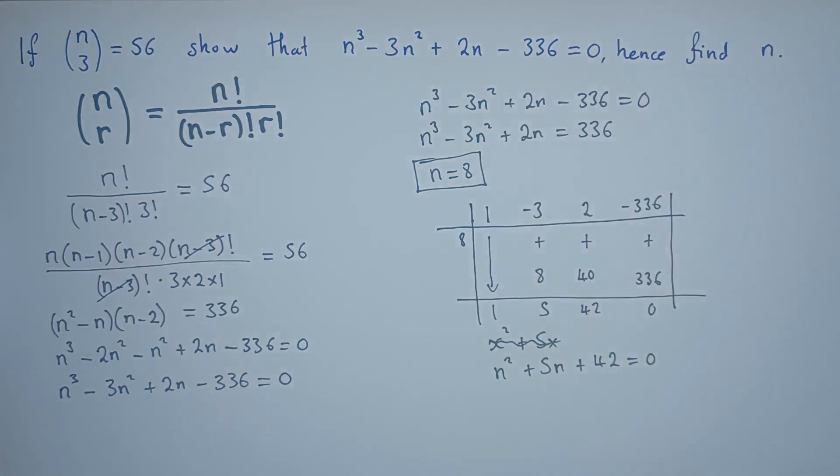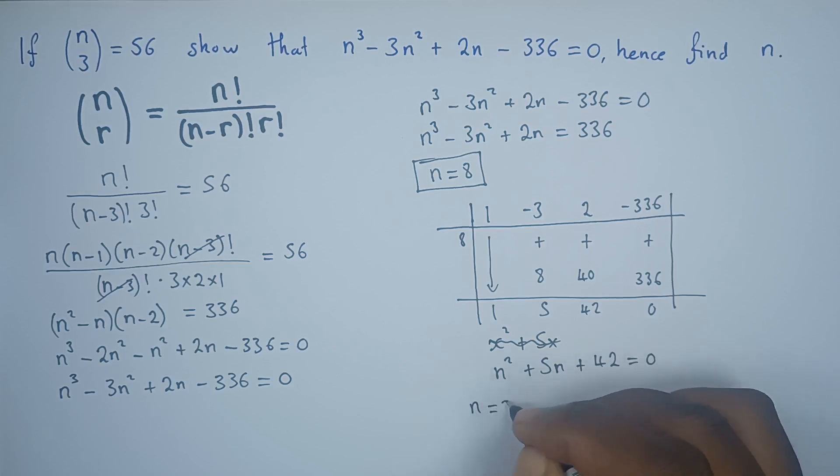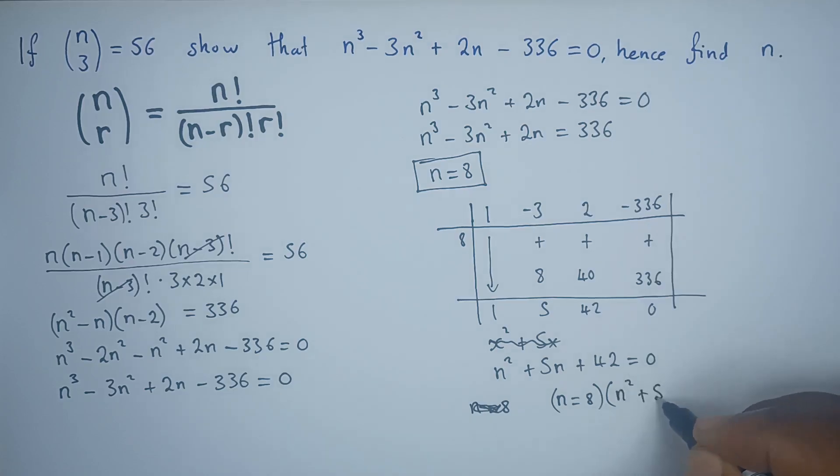Or you can present your answer as n equals 8. The other one is the quadratic n² + 5n + 42 = 0, of which this one will not be applicable since it is going into complex numbers. So the only solution in this case is just 8. So there we have it. I hope it makes sense. Thank you very much.